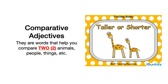Solamente podemos usar los comparativos para hablar de dos objetos, dos animales, dos cosas, no para hablar de tres o seis o veinte. Solamente usamos los comparativos cuando queremos comparar dos cosas. Y en este caso nosotros estamos en la unidad de los animales y eso es lo que vamos a aprender a comparar.